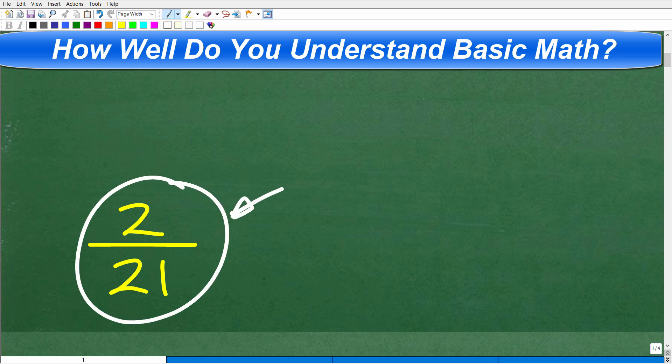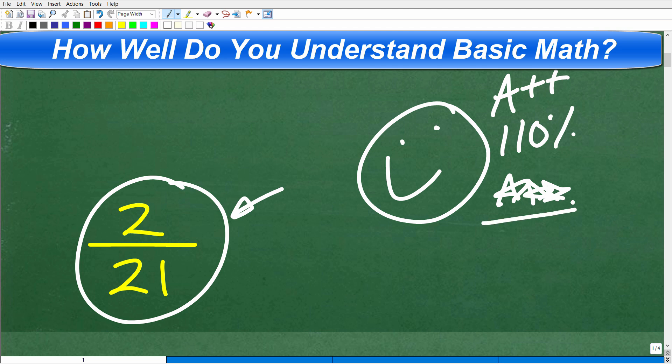So we have a lovely fraction here. And if you didn't get this right, no worries. I'll show you this full solution. But if you did get this right, that is fantastic. Matter of fact, I'm going to give you a nice little happy face, an A++, a 110% and multiple stars. So you can brag to your friends and family that indeed you are an expert in basic math and the order of operations. You are a professional mathematician at this level.